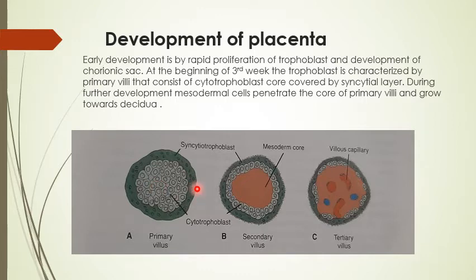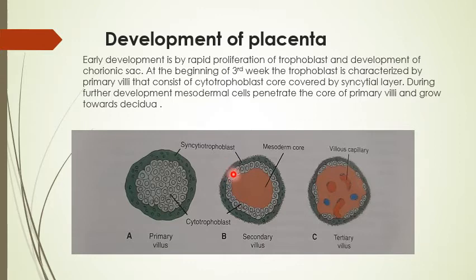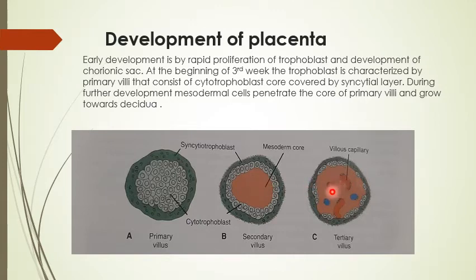The third structure which invaginates is the extraembryonic mesoderm from the chorionic plate, which starts invaginating and occupies the central position of the villus. In cross-section: outer is the syncytium, next is the cytotrophoblast. When this extraembryonic mesoderm penetrates into the villi, the name secondary villus is given — three components: syncytio, cyto, and extraembryonic mesoderm.